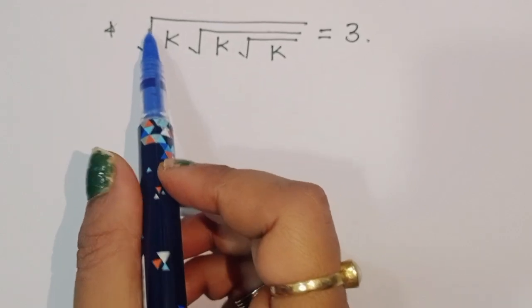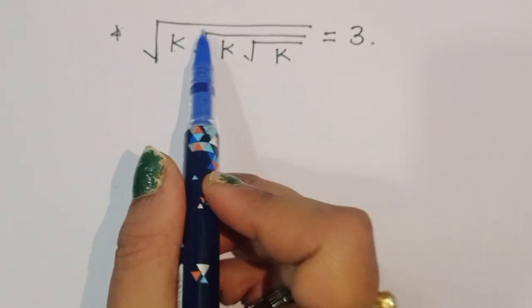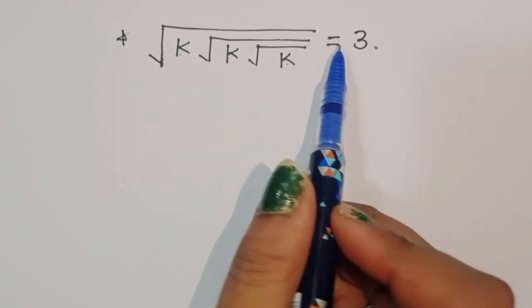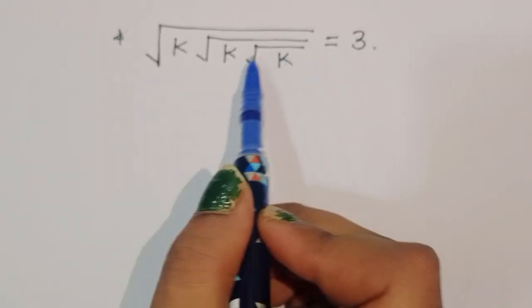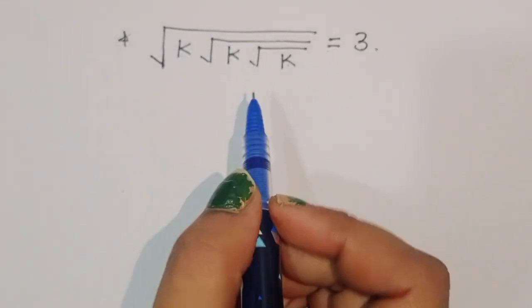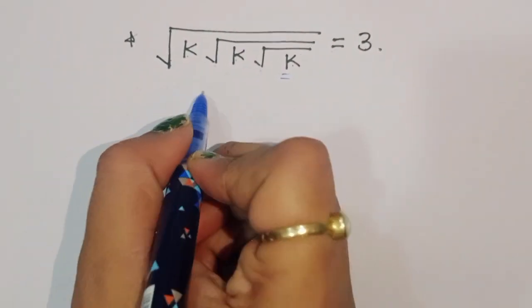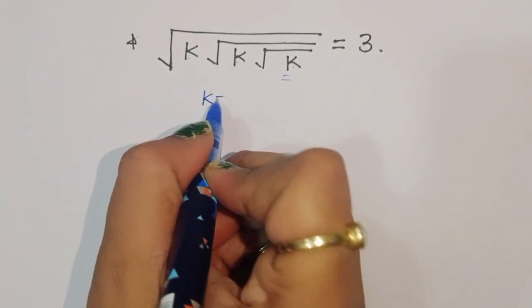The question is: the square root of k times the square root of k times the square root of k is equal to 3. We have to find out the value of k.